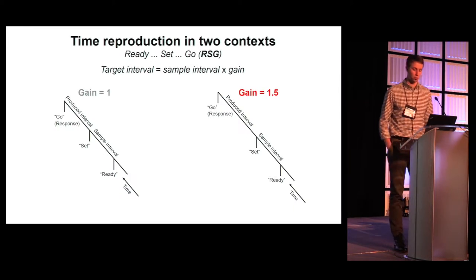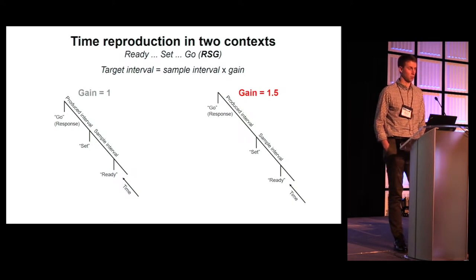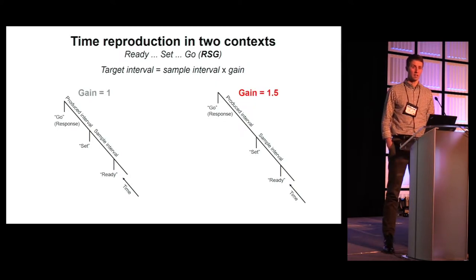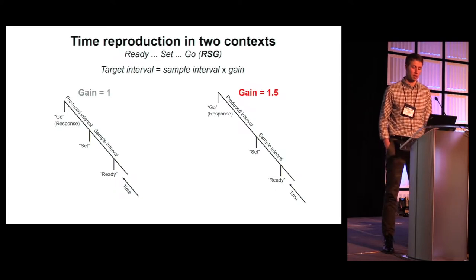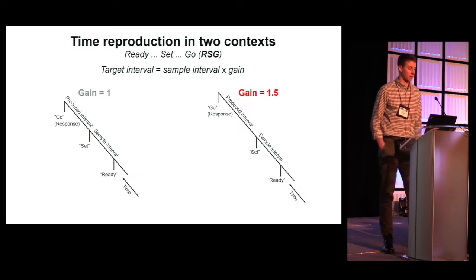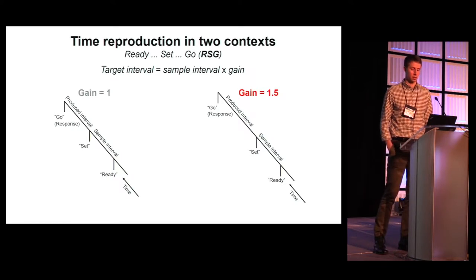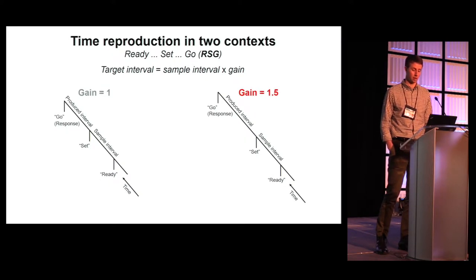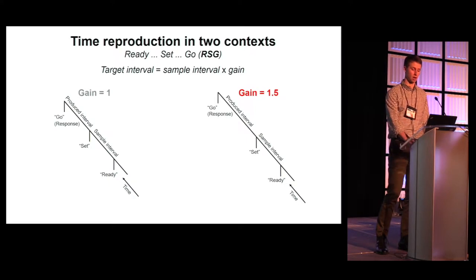The task we use to approach this problem is an elaboration of a previously described time measurement and production task, which we call ready, set, go. The task consists of two main epochs. In the first epoch, two cues, a ready followed by a set, demarcate a sample interval that a subject has to measure. We call this epoch the ready set epoch. In the immediately ensuing set go epoch, subjects have to produce using as accurately as possible an interval using a timed motor response, which we call go, according to the measured interval and the context. The relationship between the sample interval and the target interval depends on a scalar gain factor.